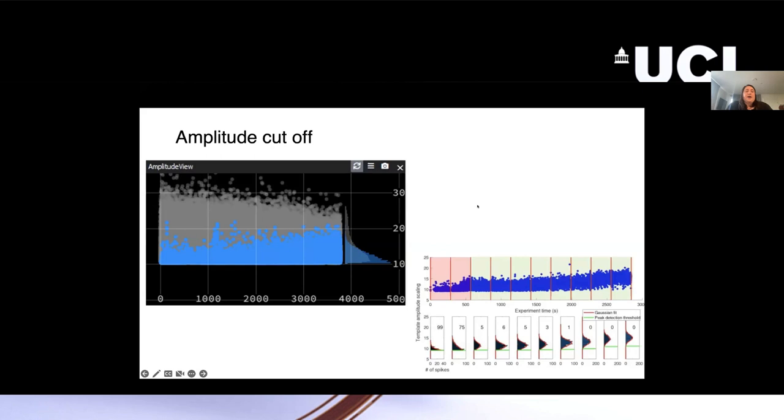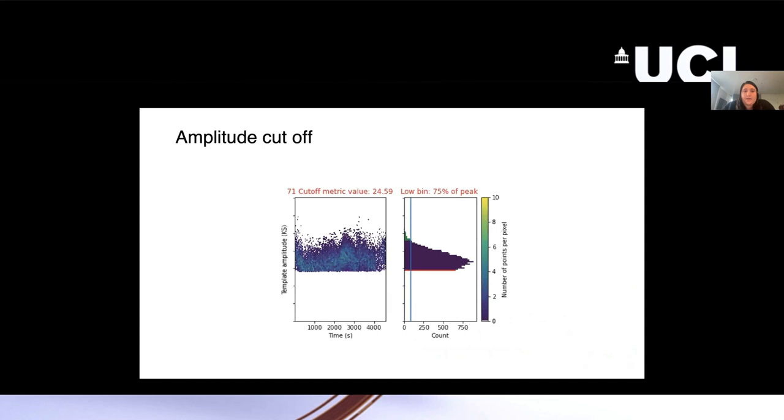As we were looking at our data, we noticed that a lot of the distributions here, even though they were above the spike detection threshold, were non-Gaussian. So we wanted a way to do this without assuming a Gaussian fit. This is just replotting an example neuron here where the template amplitude spikes that come out of Kilosort are here on the left.